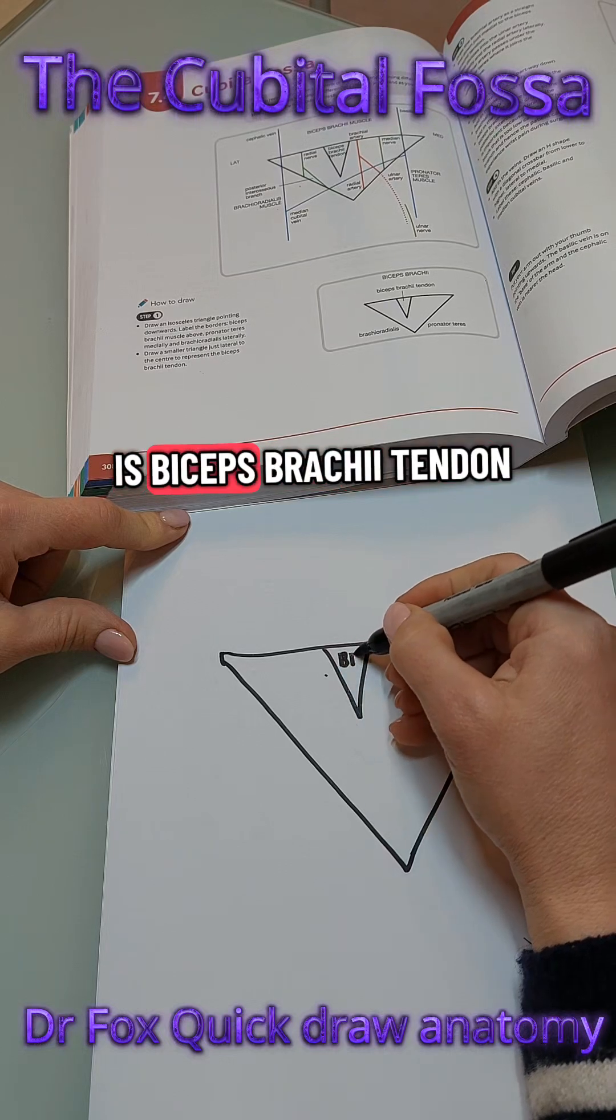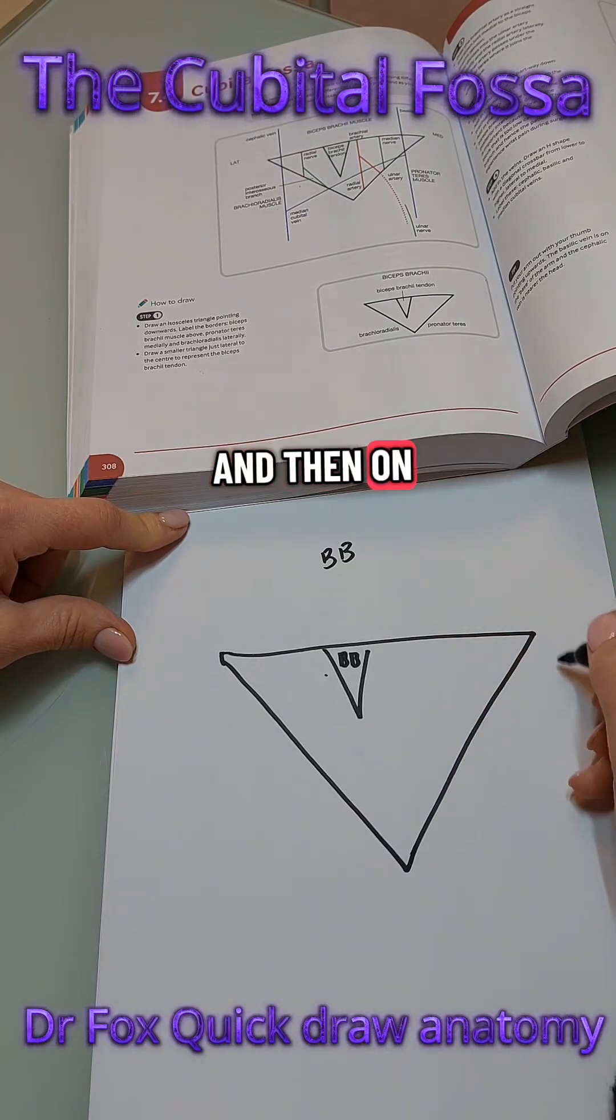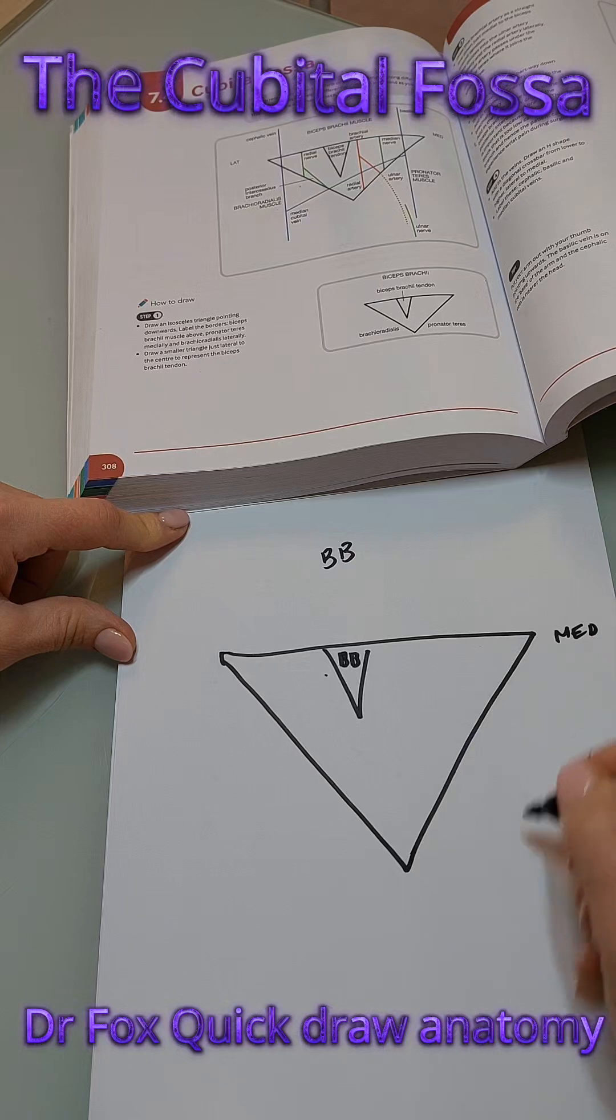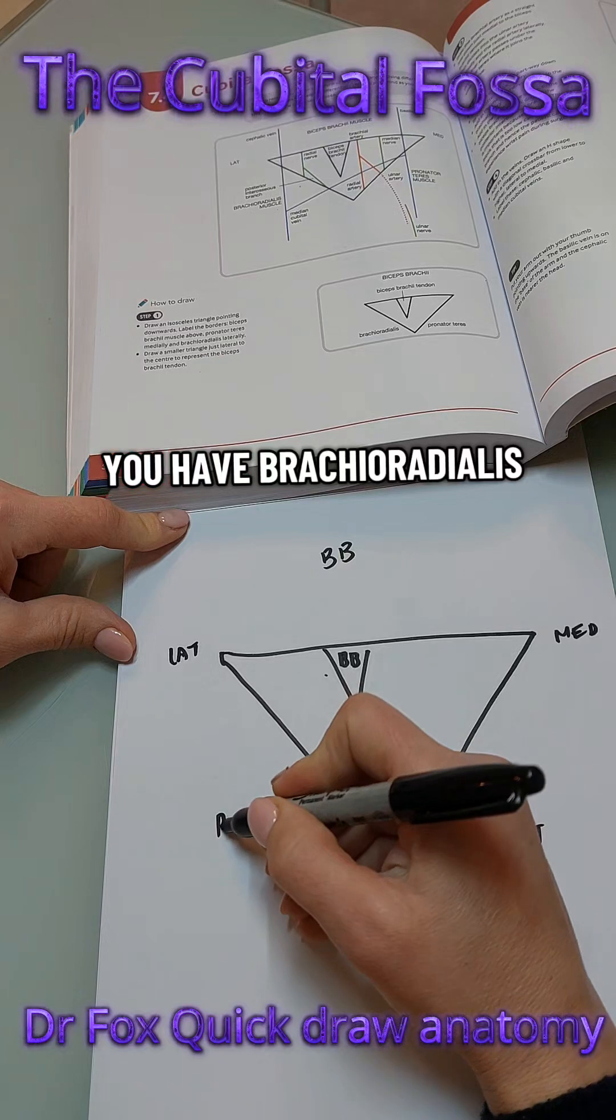The smaller triangle is biceps brachii tendon and above this you have biceps brachii. Then on the medial side you have pronator teres and on the lateral side you have brachioradialis.